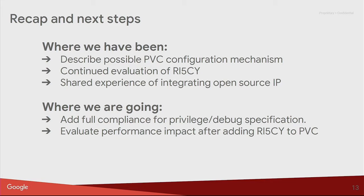Recap and next steps. I described the Pixel Visual Core configuration mechanism and where the RISC-V core fits in our evaluation. We continued the evaluation with the RI5CY core and shared our experience integrating that open source IP. Where we'd like to go from here: we see a lot of application space for a RI5CY-type core that is fully compliant with the privilege and debug spec and has been verified. After integrating the RI5CY core, we're looking to measure the performance increase from the Pixel Visual Core configuration space.